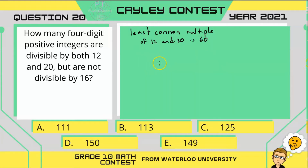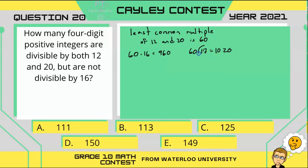So then you can pull out your calculators. If you try 16 times 60, which is 960, that's not a four-digit number. But if we go one higher and do 60 times 17, we get 1020. So multiplying by 17 gives us our first four-digit number — that's our smallest four-digit multiple.